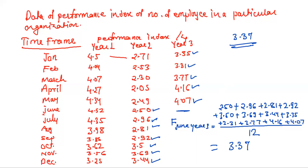After that, if we want to identify the value of performance index in the month of July in year 3, then we consider the value from July of year 2: 2.96, 2.81, 2.92, 3.5, 3.69, 3.44, 3.35, 3.31, 3.77, 4.16, 4.07, and 3.37. Then also identify in a similar way the forecast value of August, September, October, November, and December. This is the basic process to identify the simple average or the forecasting of data through the simple average under the technique of smoothing technique.